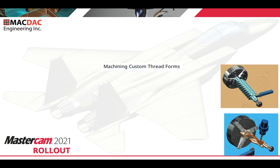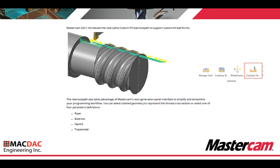Machining custom thread forms. Mastercam 2020 introduces the new lathe custom thread toolpath to support custom thread forms. Over to the right in the general lathe or mill turn selection, you will see, next to prime turning, a custom thread icon. Once you select that, it brings you into the new toolpath, which takes advantage of Mastercam's next generation panel interface to simplify and streamline your programming workflow.